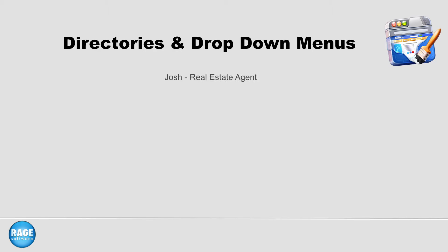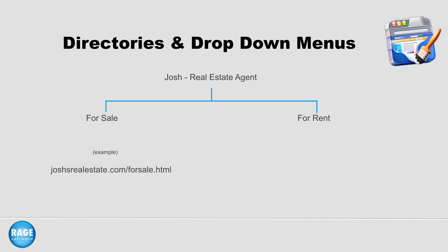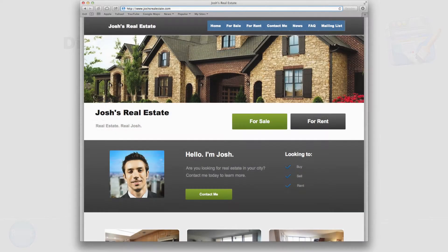Assume Josh is a real estate agent and has houses for sale and for rent. Josh might have two URLs for his website for each of these products he offers. One might be joshsrealestate.com/for-sale.html and joshsrealestate.com/for-rent.html. His navigation menu on his website might look something like this.